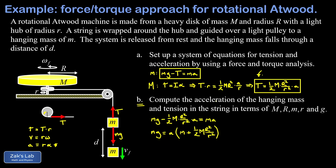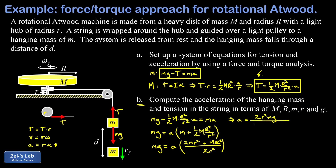To simplify, we collapse the right-hand side into a single fraction with common denominator two little r squared. Multiplying little m by two little r squared over two little r squared, we can add the fractions: the numerator becomes two little m r squared plus big M big R squared, all over two little r squared. Multiplying both sides by the reciprocal, we get a equals two little r squared times little m times g, divided by two little m little r squared plus big M big R squared.